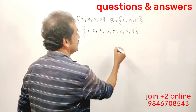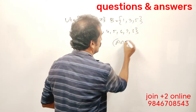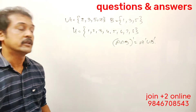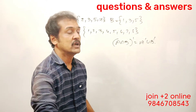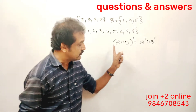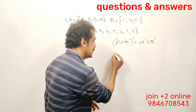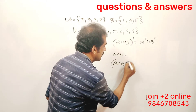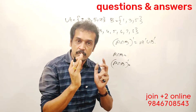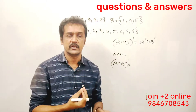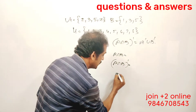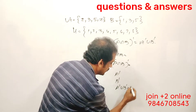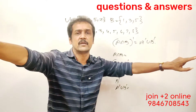Now let's verify that A intersection B whole complement is equal to A complement union B complement. First, find A intersection B, then find A intersection B whole complement. Then find A complement and B complement and take their union.